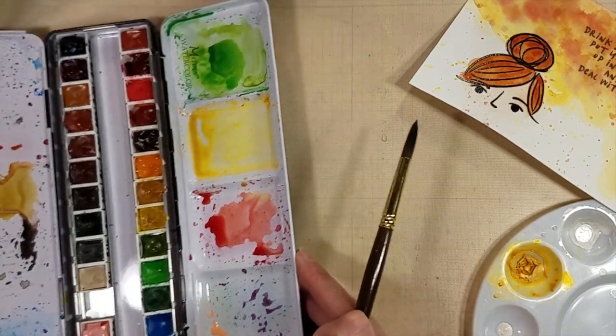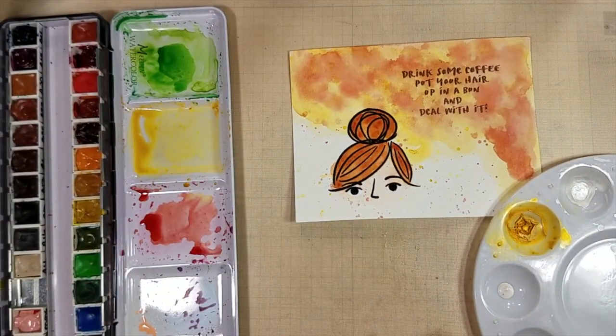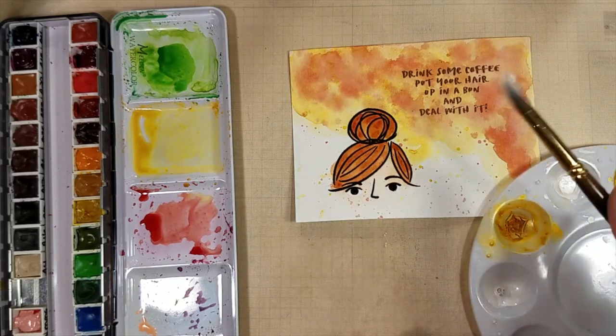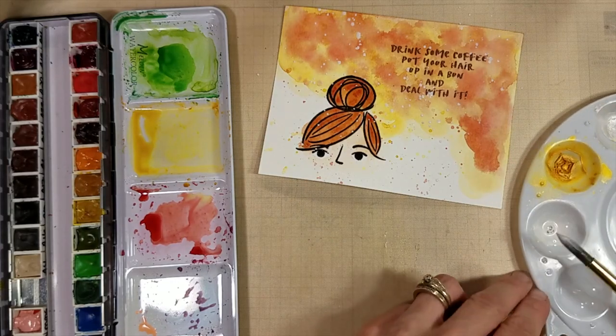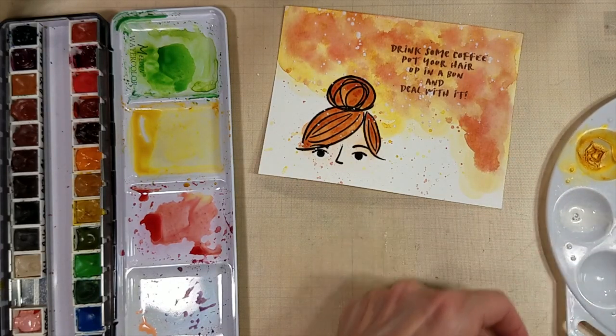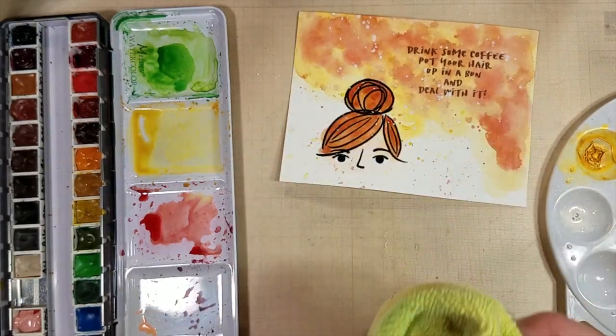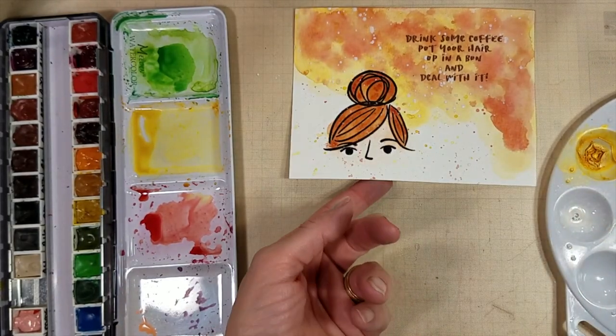Now I'm going to use some Hero Arts Glimmer ink, I believe this is called. And this is the white version. And I'm adding some sparkle because I have to have sparkle. Sorry. Life must sparkle. Even when it doesn't in real life. We need sparkle.